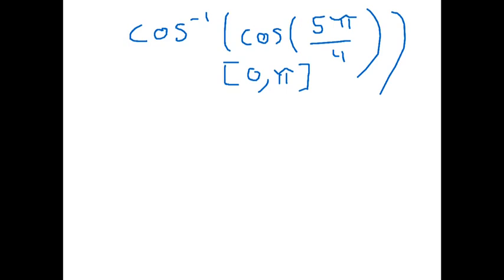This is where reference angles come in handy. What we can do now is actually find the true value of cosine of 5π over 4. By the way, 5π over 4 is equivalent to 225 degrees, and this is equal to negative square root of 2 over 2.